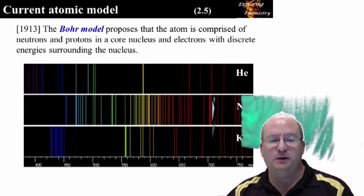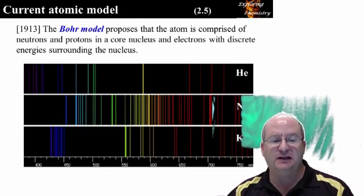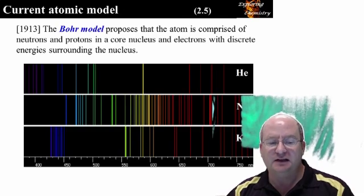The Bohr model proposes that the atom is comprised of neutrons and protons in a core nucleus, with electrons existing with discrete energies surrounding the nucleus. We know that the electrons exist with discrete energies because transitions between these electronic energy levels occurs at specific wavelengths. This is illustrated by the emission spectra of helium, neon, and krypton, shown here.